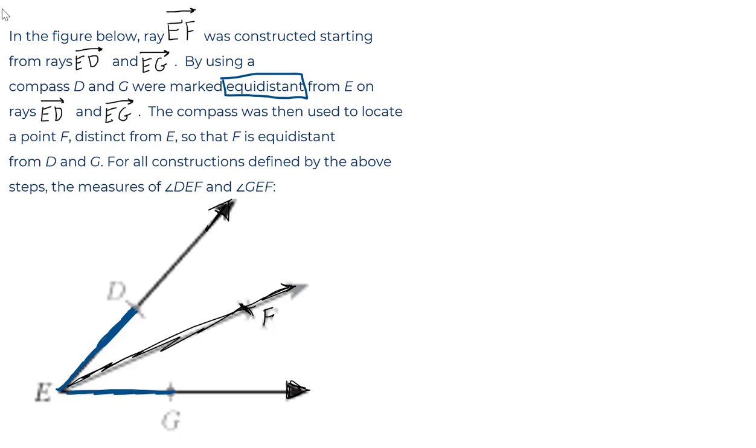So that's a big piece of information. The second thing - the compass was then used to locate a point F distinct from E. So F is a different point from E. This is important.